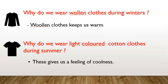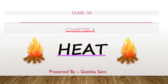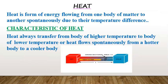We will discuss warmness and coolness in our fourth chapter, that is Heat. First, the definition of heat: heat is the form of energy flowing from one body of matter to another spontaneously due to their temperature difference. Characteristic of heat: heat always transfers from a body of higher temperature to a body of lower temperature, or heat flows spontaneously from a hotter body to a cooler body.